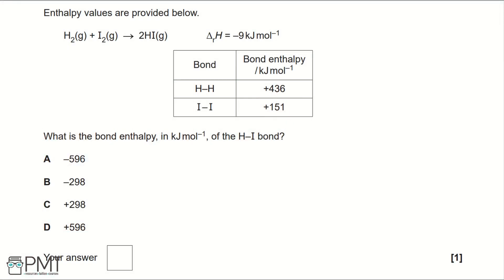Enthalpy values are provided below. What is the bond enthalpy in kilojoules per mole of the H-I bond? To work out enthalpy values with bond enthalpies, you take the reactants and minus from the products. What I mean by this is the bond enthalpy of the reactants minus the bond enthalpies of the products.